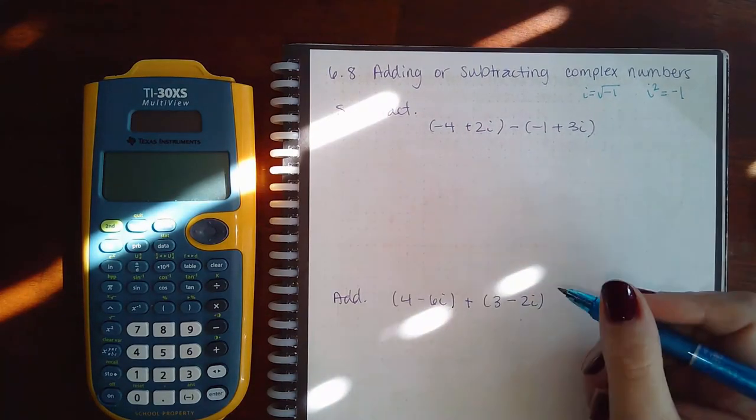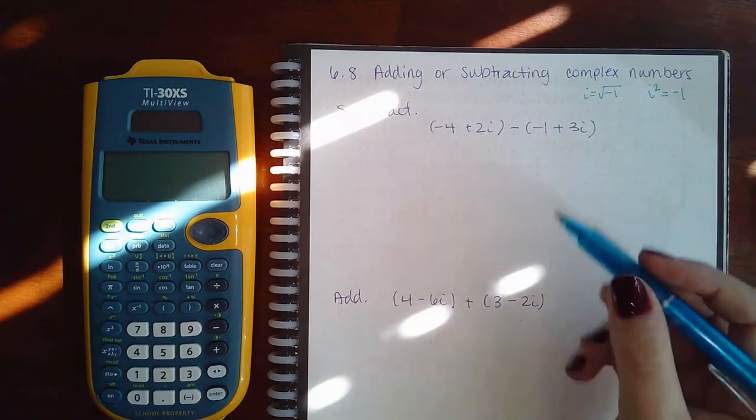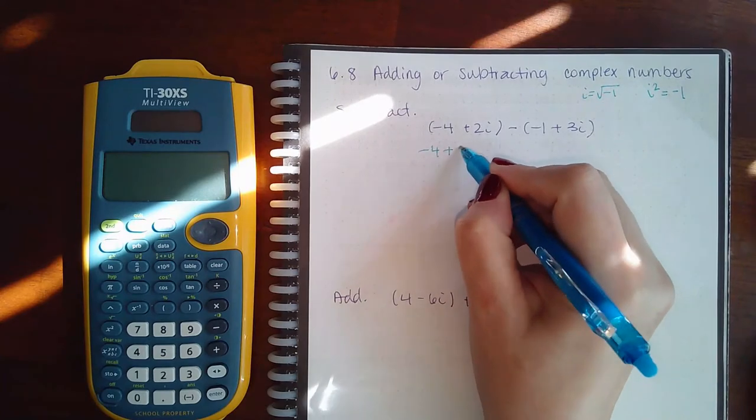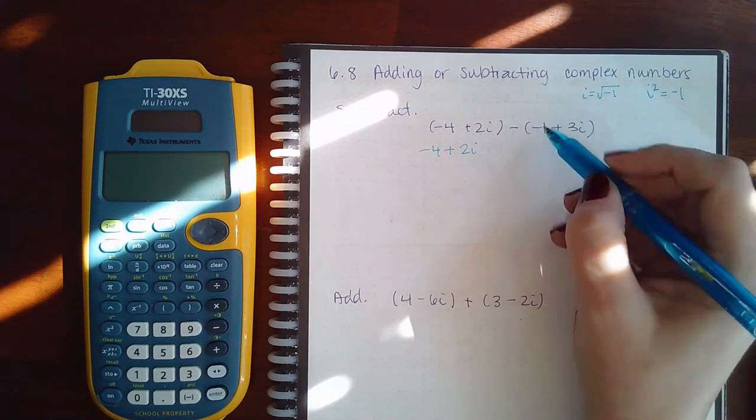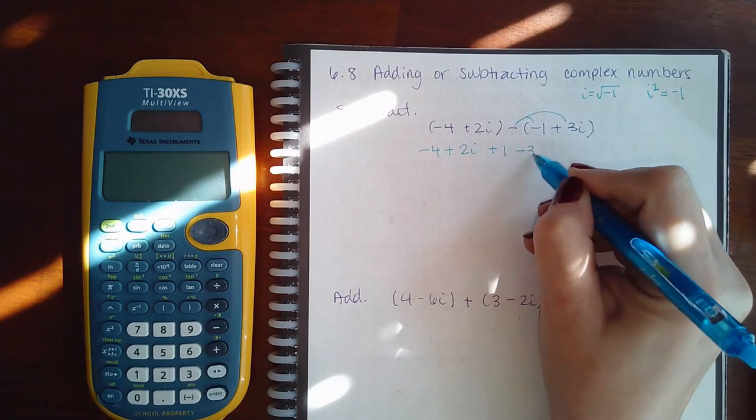Essentially, we're going to combine like terms and see what we have left over. I don't have anything to distribute here, so I just have negative 4 plus 2i. If I distribute this negative, I end up with positive 1 and minus 3i.